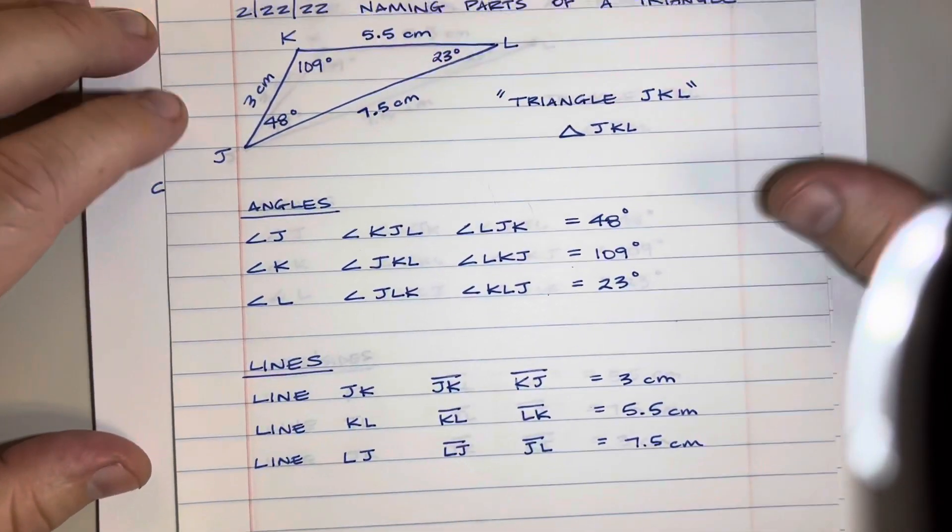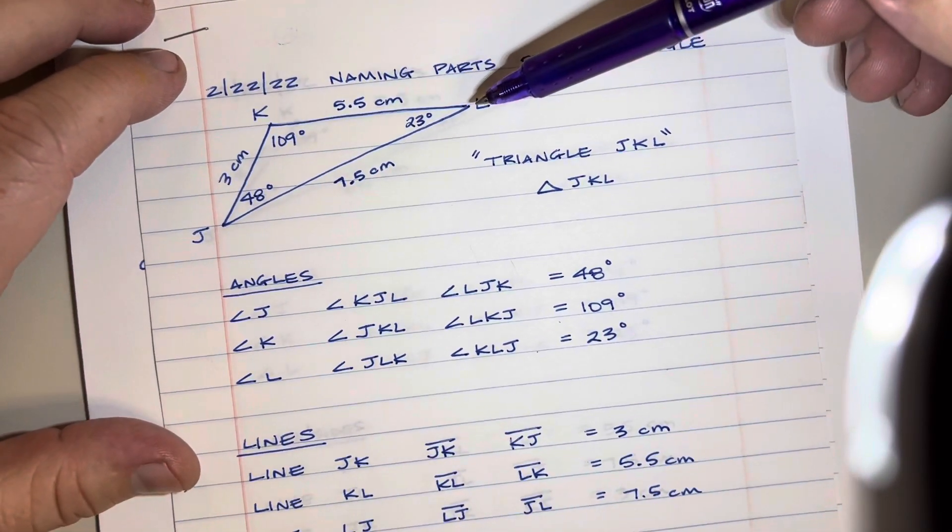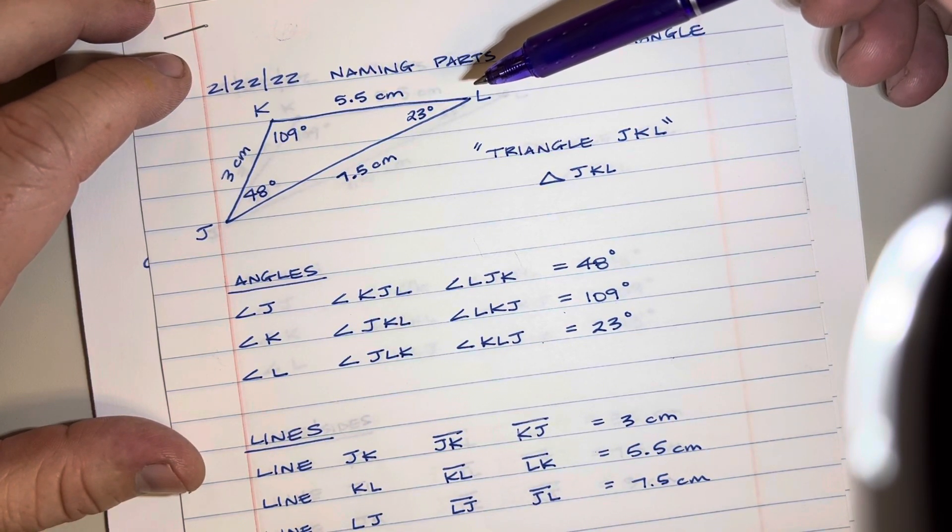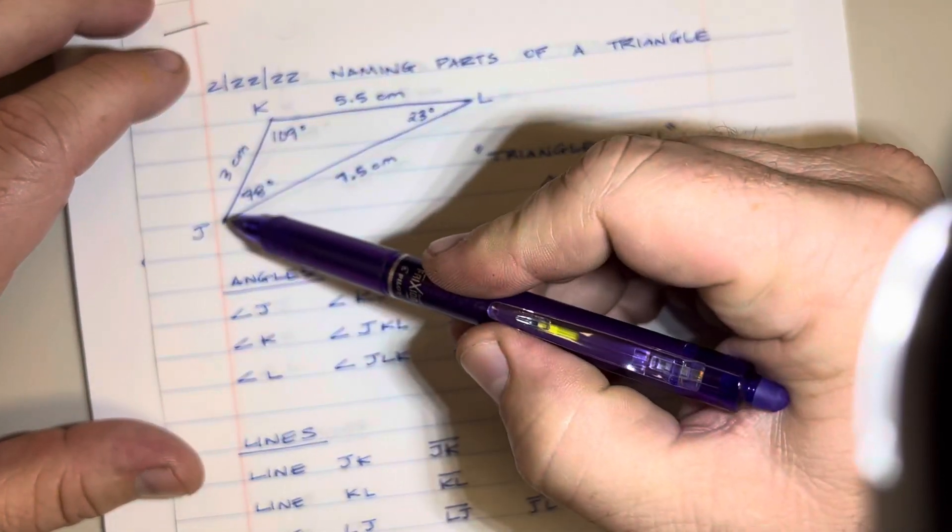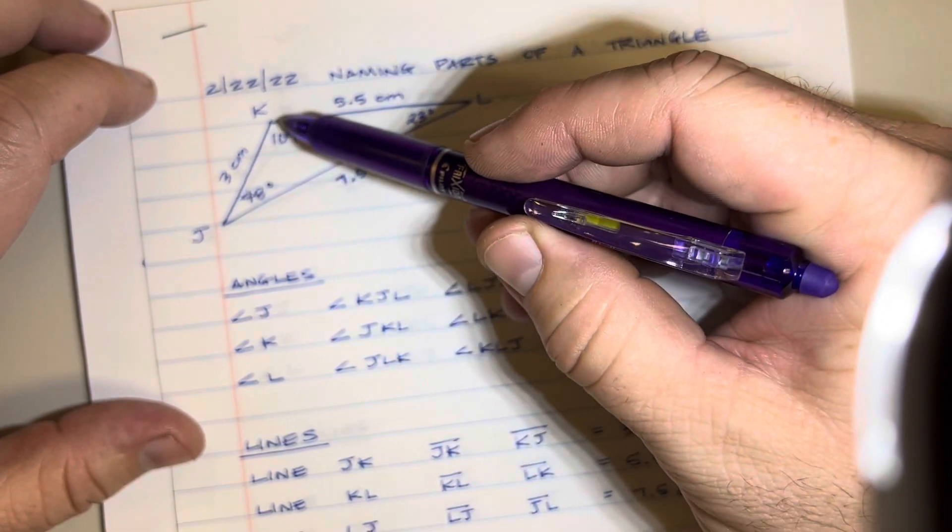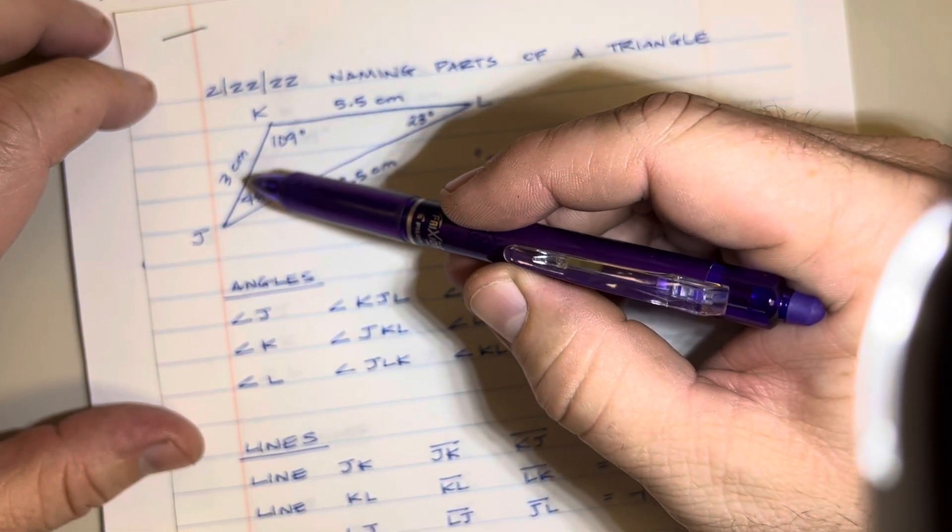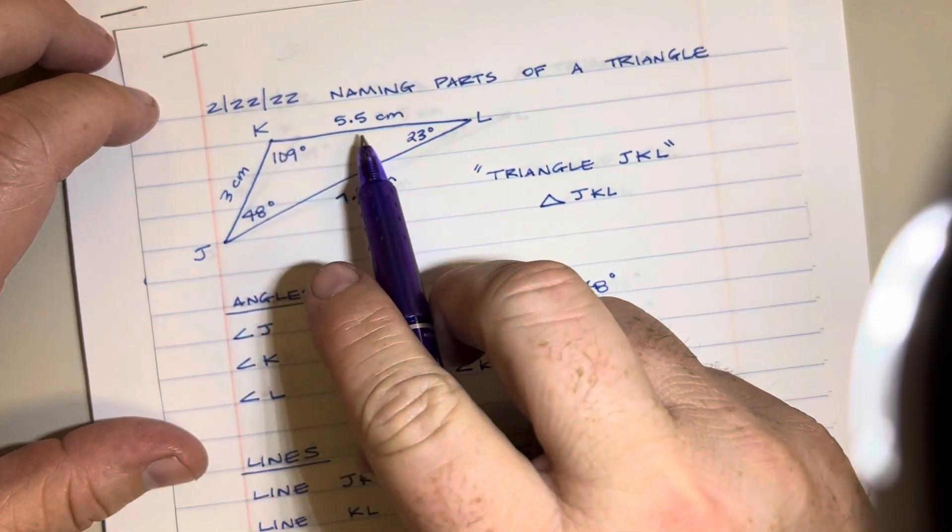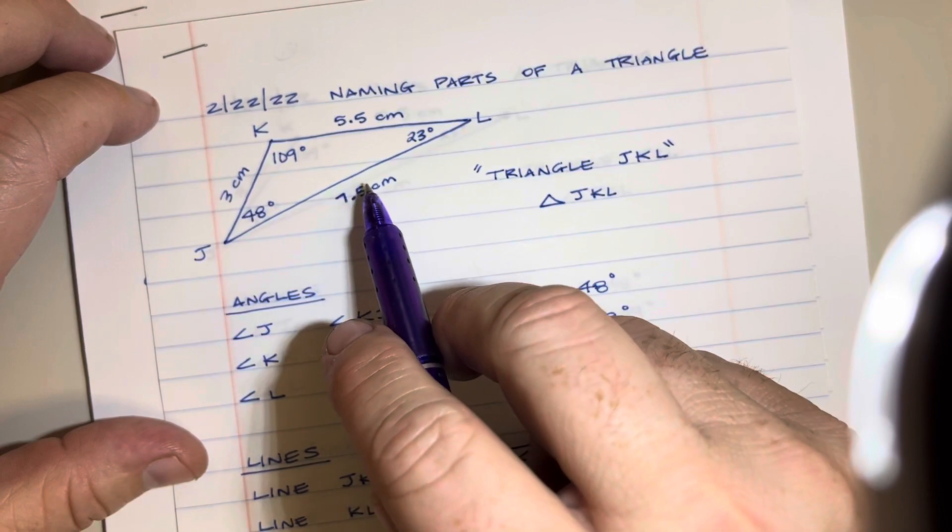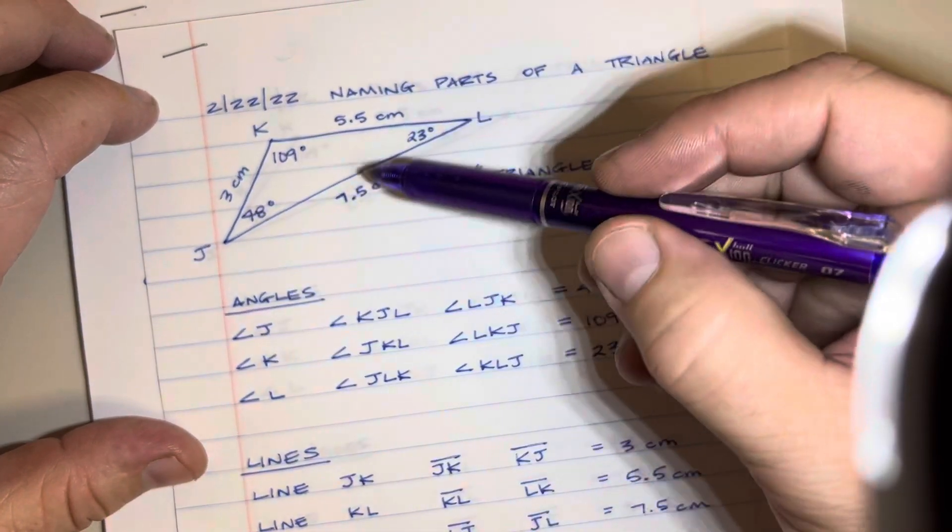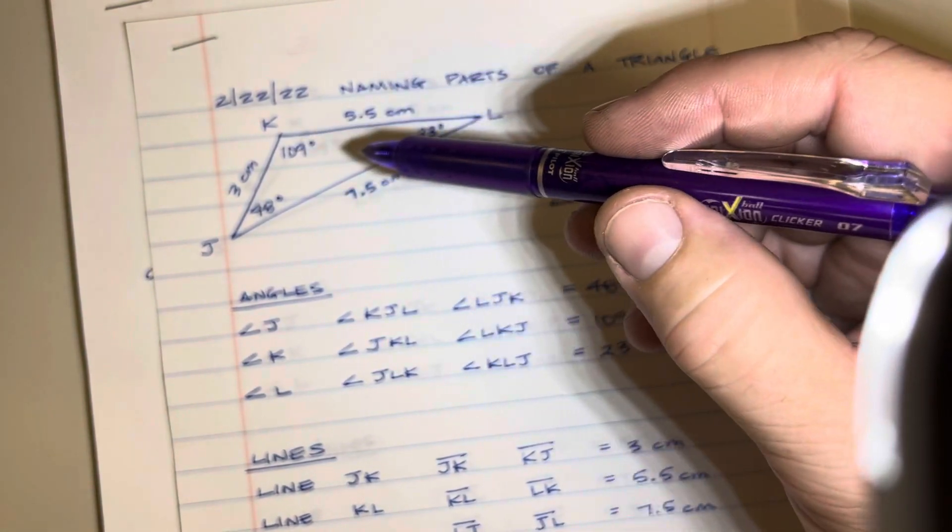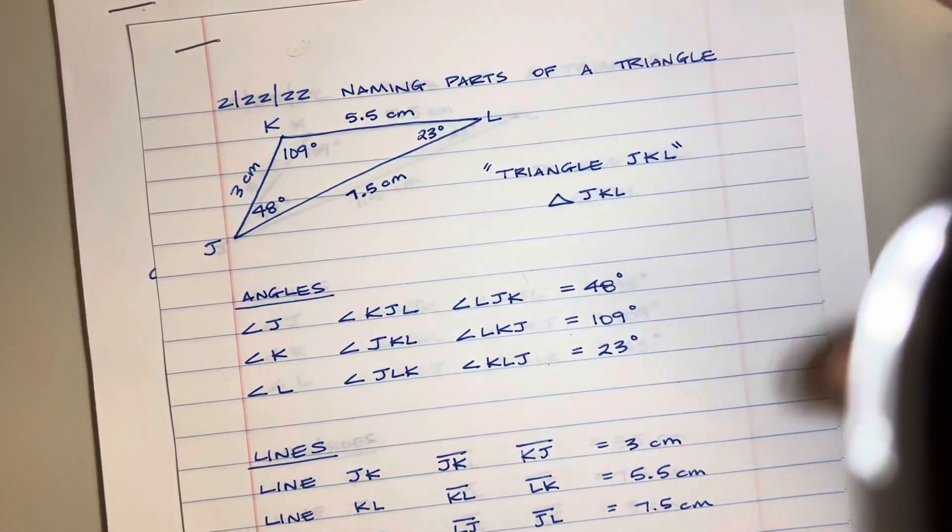The next thing we did was we took some notes. We drew a triangle and we labeled it with the length of each side. So we took a ruler and we measured the side from J to K and we wrote down the measurement there of three centimeters, and then we measured with a ruler from K to L and we measured from J to L as well and we made sure to note what the length was.